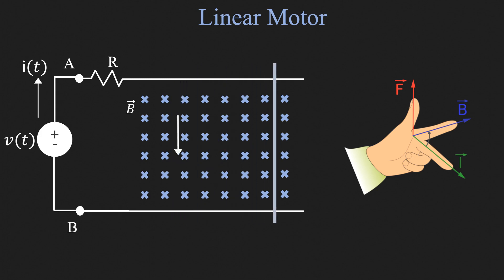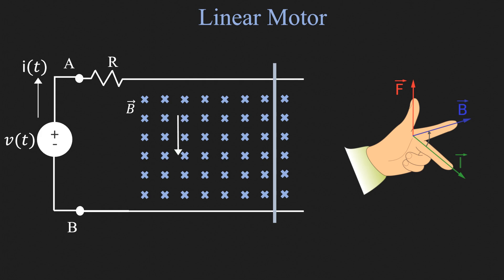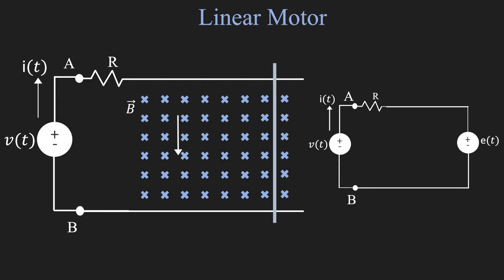But as we saw earlier, the moving rod will induce a voltage in the circuit given by Faraday's law. So the equivalent circuit becomes this. The induced voltage is also referred to as the back EMF induced in the windings.